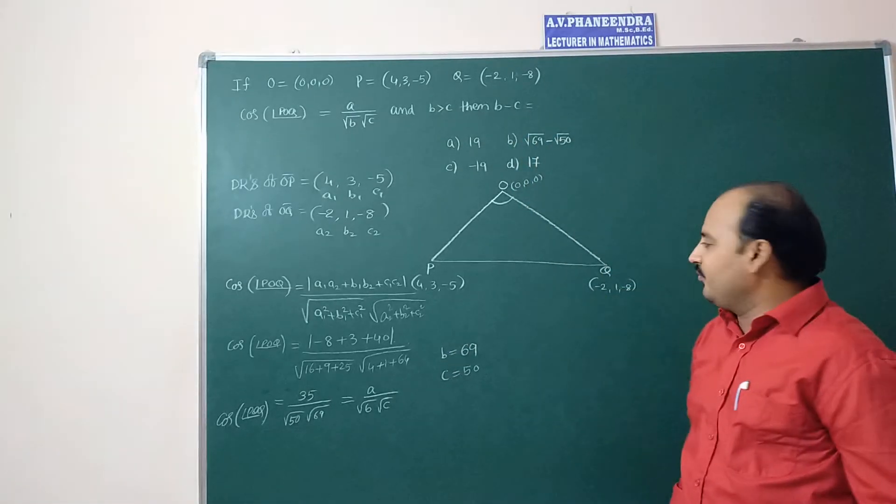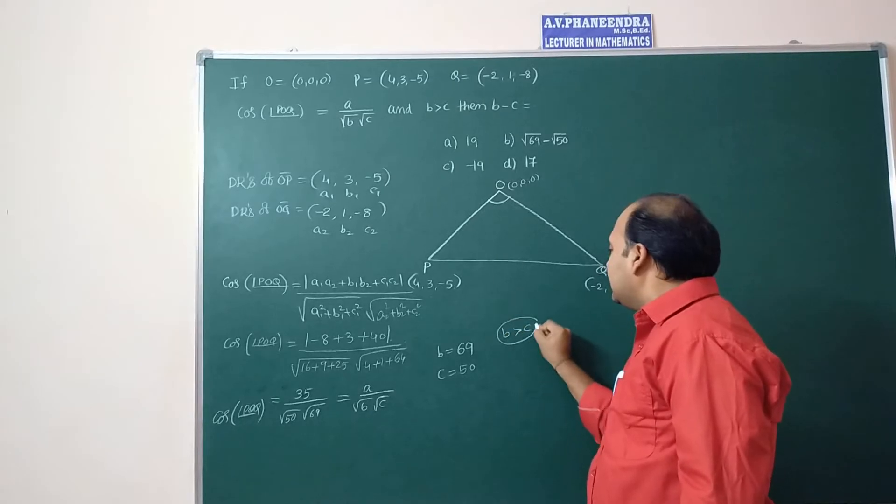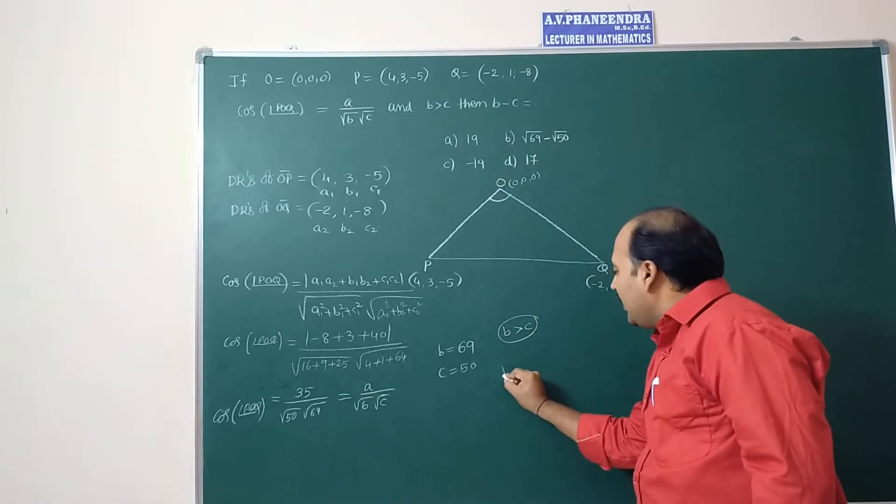So clearly b is greater than c. This condition is satisfying. Now calculate b minus c. B minus c is equal to 69 minus 50 which is equal to 19.